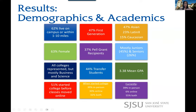The average GPA was 3.38. Roughly 50-50 started classes before we moved online versus after. And when they started college, that's how they started — and their current modality is mostly a mix of in-person and online classes.